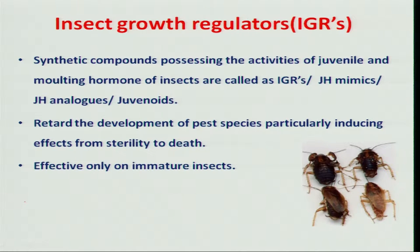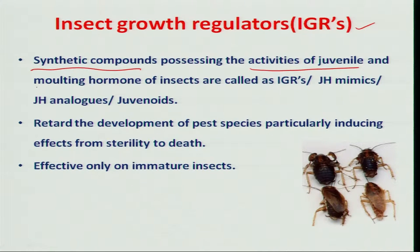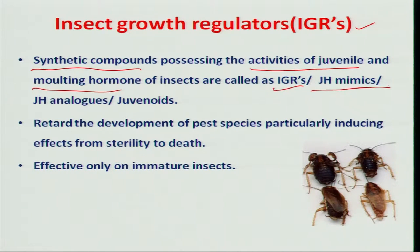One such group is insect growth regulators. These are synthetic compounds which mimic the activities of juvenile and molting hormones of insects, which are very important in insect maturation and development. They are called insect growth regulators, also known as JH mimics, JH analogs, and juvenoids.